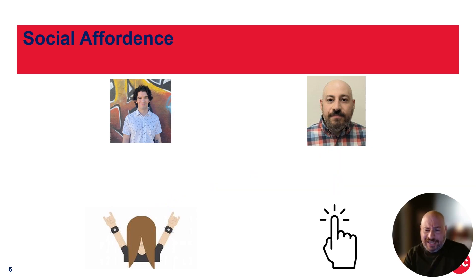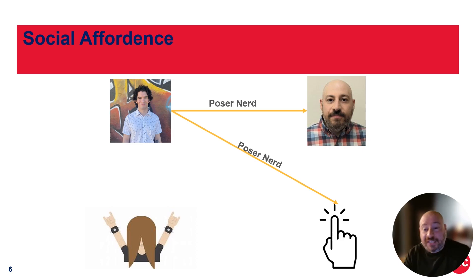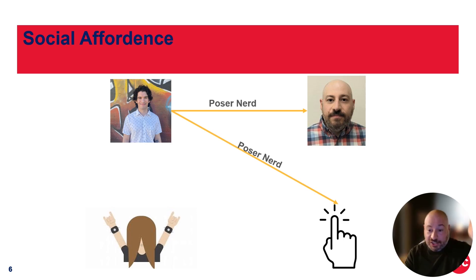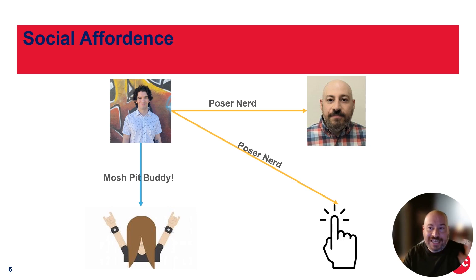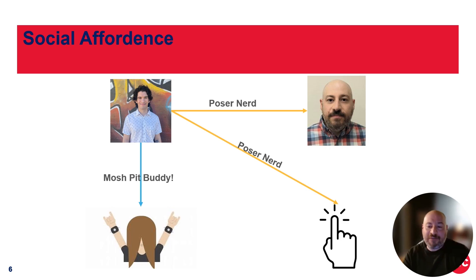Zach, on the other hand, would perceive this totally differently. He would see us as poser nerds and be like, oh my god, they're going to drive me crazy — Alex is going to go off and talk to that weirdo who's tapping in the air. Instead, he's going to look for the other guy and say, that's my mosh pit buddy. That's the guy who's going to protect me when we go into the mosh pit, he's going to have my back and we're going to have a great time.